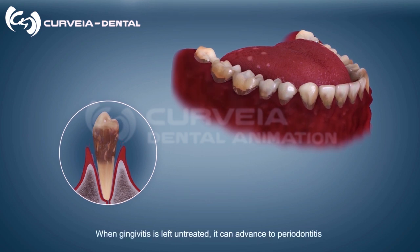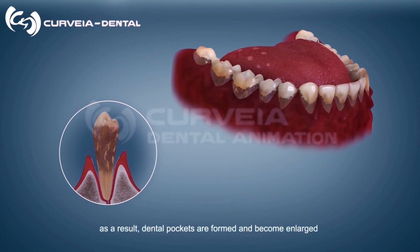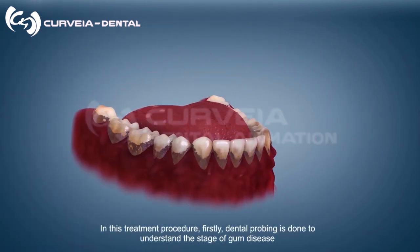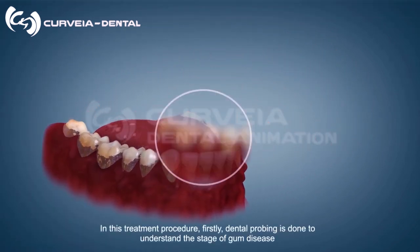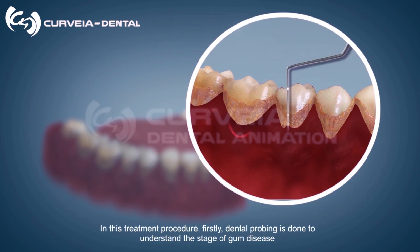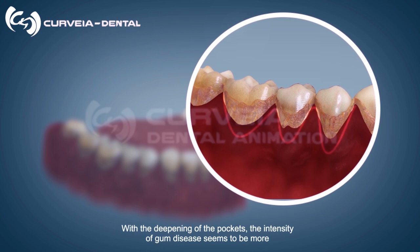When gingivitis advances to periodontitis, dental pockets are formed and become enlarged. In this treatment procedure, dental probing is first done to understand the stage of gum disease. With the deepening of the pockets, the intensity of gum disease is seen to be greater.